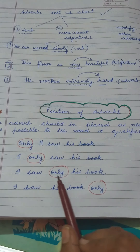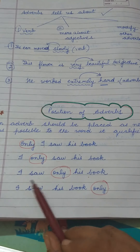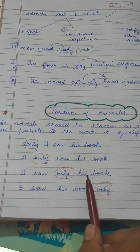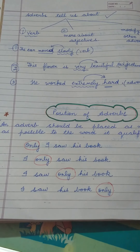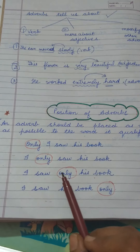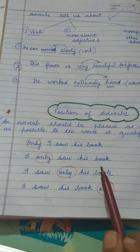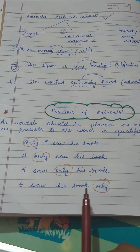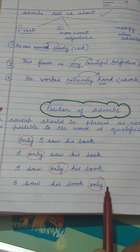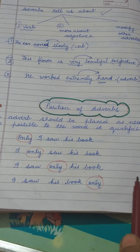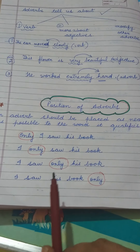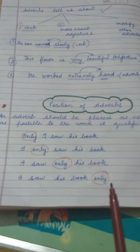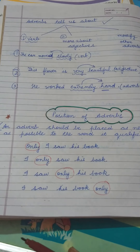'I saw only his book' — I didn't see anyone else's book, I just saw his book. And 'I saw his book only' means I did not see even a pen, pencil, or anything else — I saw his book only. See how the meaning can be changed with the position of the adverb in the sentence. Very very interesting!